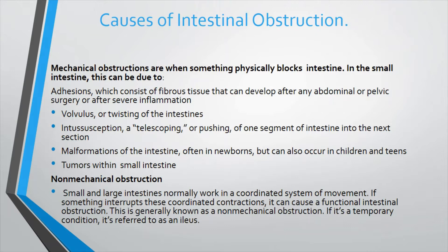Next is volvulus — a twisting of the intestine. Due to any mechanical cause, the intestine twists and becomes cut off. Next is intussusception — a telescoping or pushing of one segment of intestine into the adjacent active segment, so that one section is pushed into the next. This is intussusception. We have seen adhesion, volvulus, and intussusception as mechanical causes.